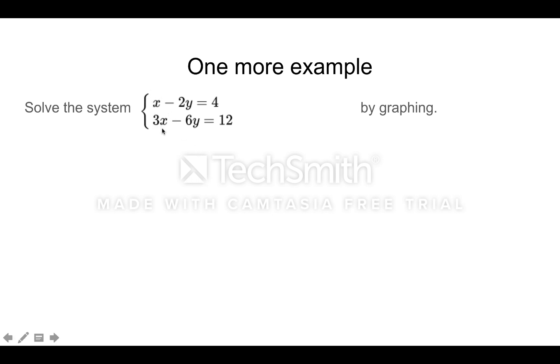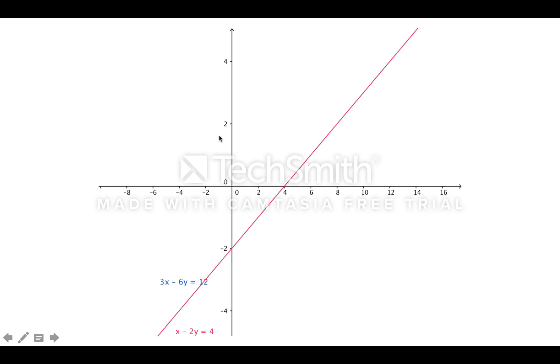One more example. Say we want to solve this system of equations. Again, we'll do it by graphing. So we graph both lines. We graph x minus 2y is 4, 3x minus 6y is 12, and we get this.